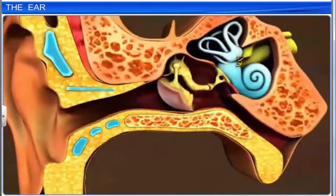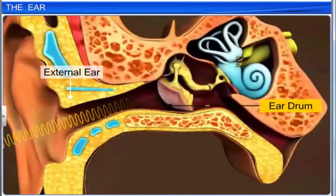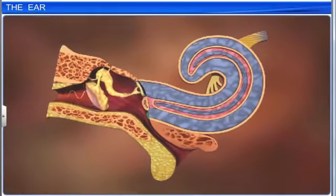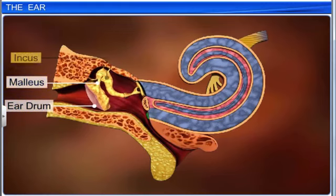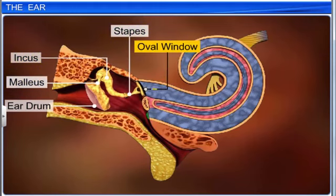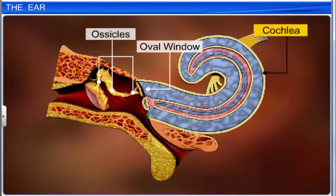Now we'll see how the ears enable us to perceive sounds. The external ear receives sound waves and directs them to the eardrum. The eardrum vibrates in response to sound waves, and transmits them through the ear ossicles — the malleus, incus, and stapes — to the oval window. The ossicles in turn amplify the sound and pass the vibrations through the oval window to the fluid of the cochlea.